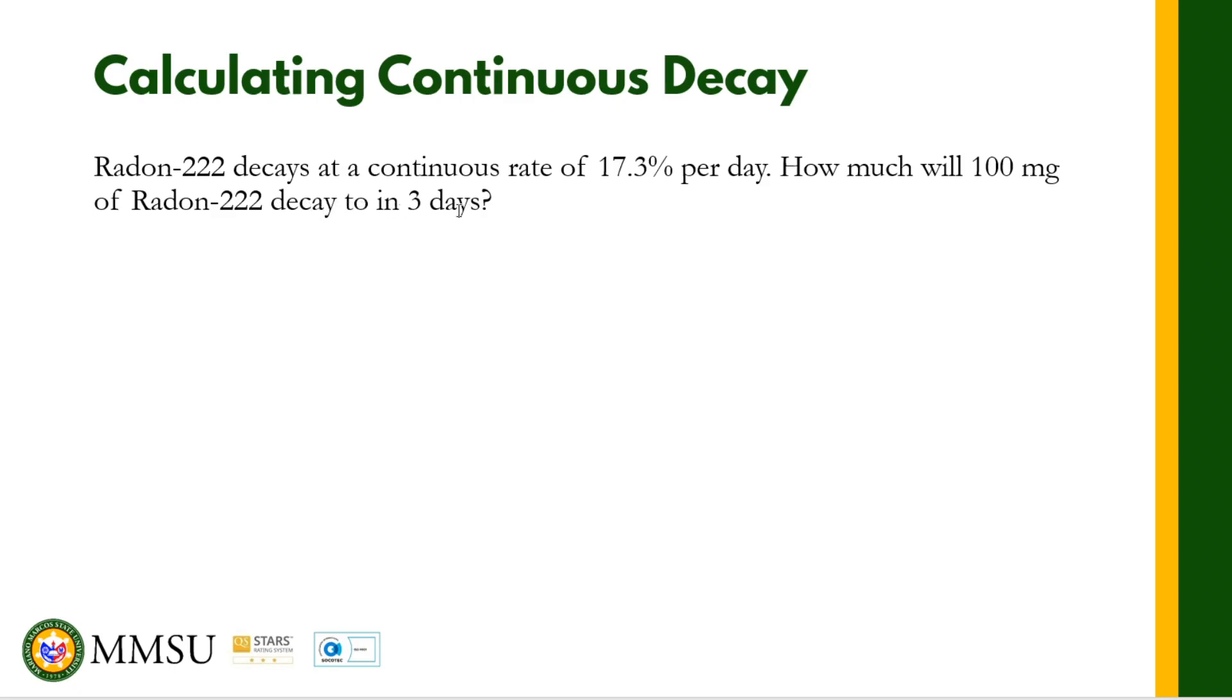Radon-222 decays at a continuous rate of 17.3% per day. How much will 100 mg of Radon-222 decay to in 3 days? We have a continuous rate here of 17.3% per day, our initial amount is 100 mg, and our time is 3 days.